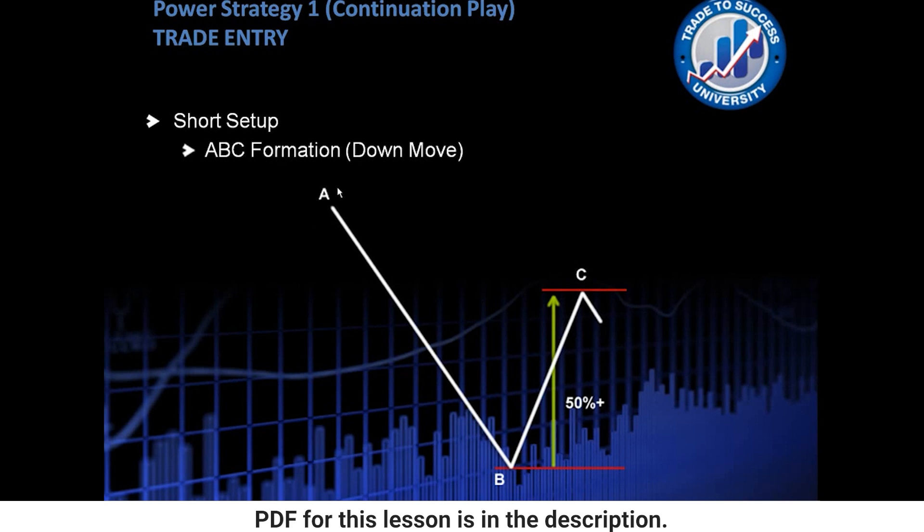So just the reverse, we've got A higher now, A to B coming down, B to C going up, and the B to C retracement has to be at least 50%, but obviously as we know less than 90% of the A to B move.